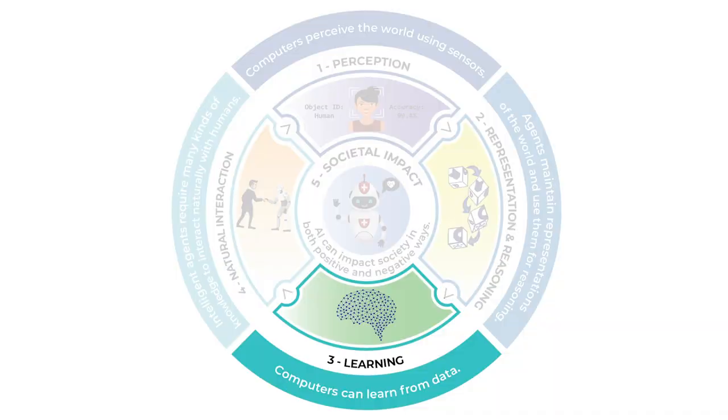Number three, learning from data. Computers use a lot of data to do the processing that allows them to think artificially — that's artificial intelligence. Almost all AI systems are made from a lot, a lot of data.